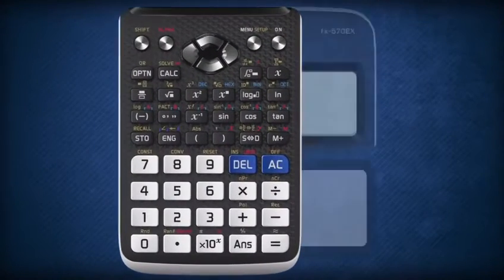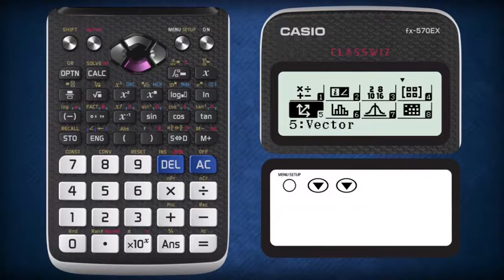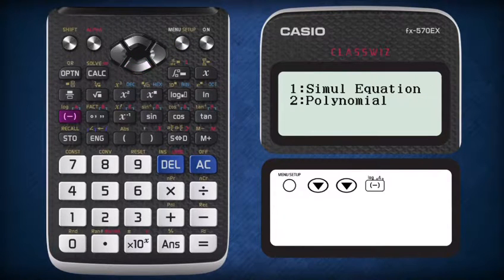So, using your Casio Class Whiz, press menu, scroll down by pressing the down button twice, select option A, which is the equation key.